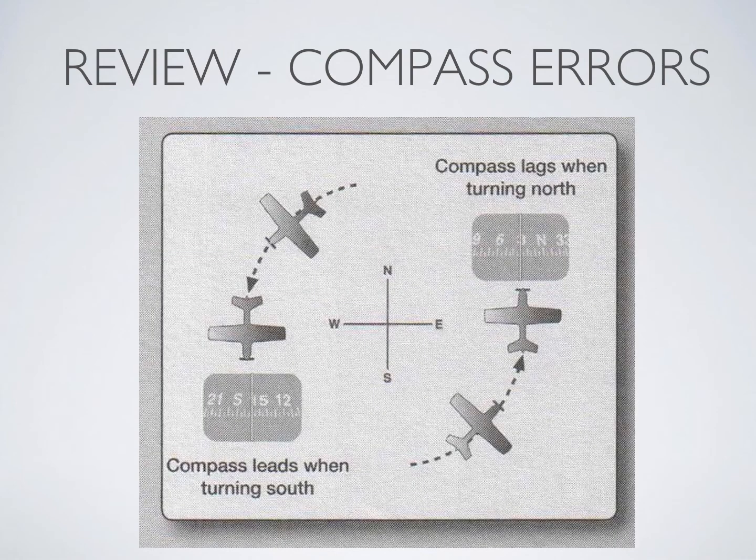When you are accelerating, decelerating, or turning, you cannot trust your compass. The problem in a partial panel situation is that you no longer have a heading indicator. So if you execute a turn and can't trust your compass, how do you know you're going to roll out on a specified heading? This is exactly why we study timed turns — because timing the turn is how you roll out on your predicted and desired heading when your compass is unreliable.